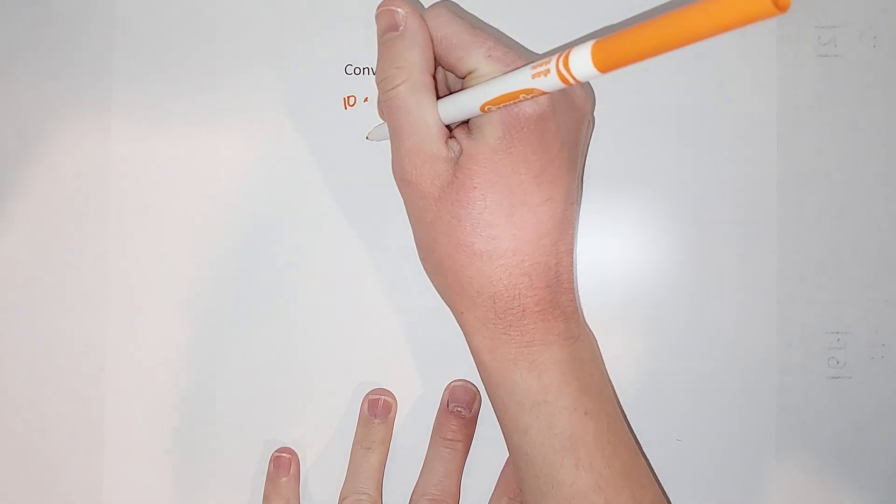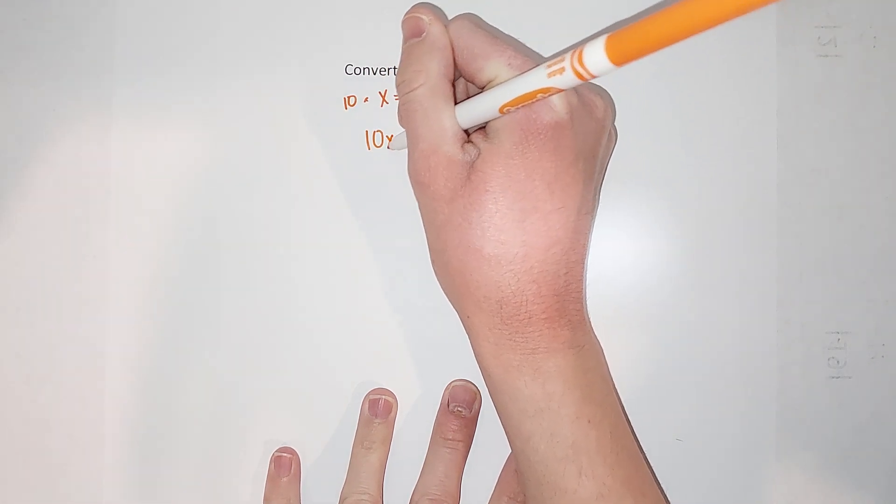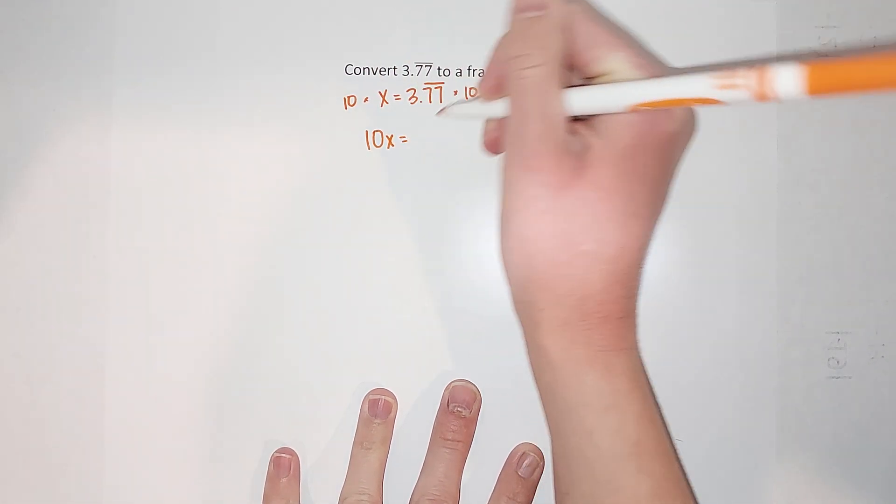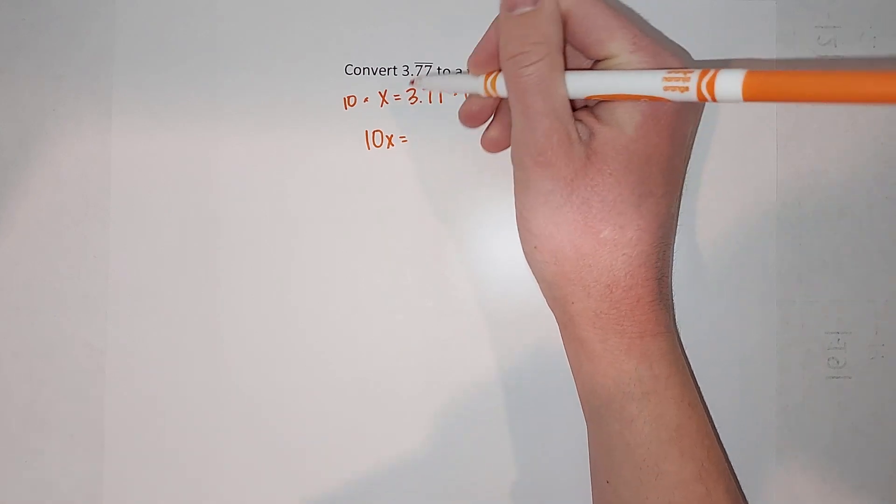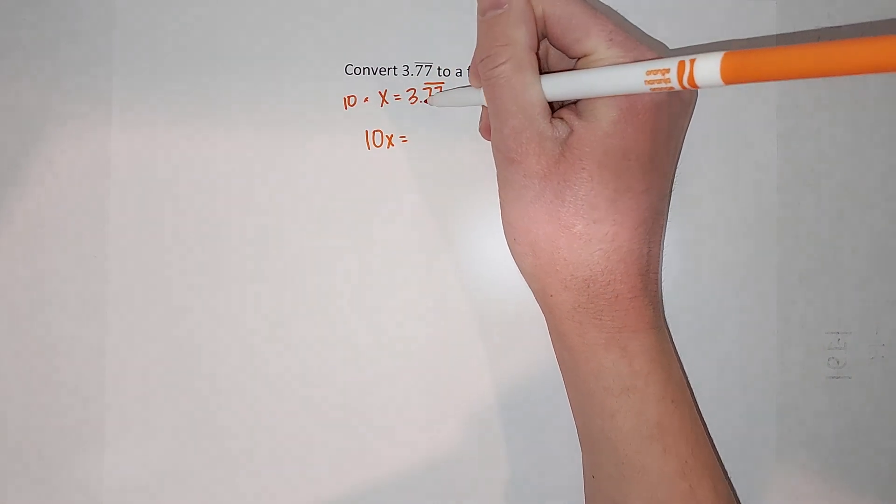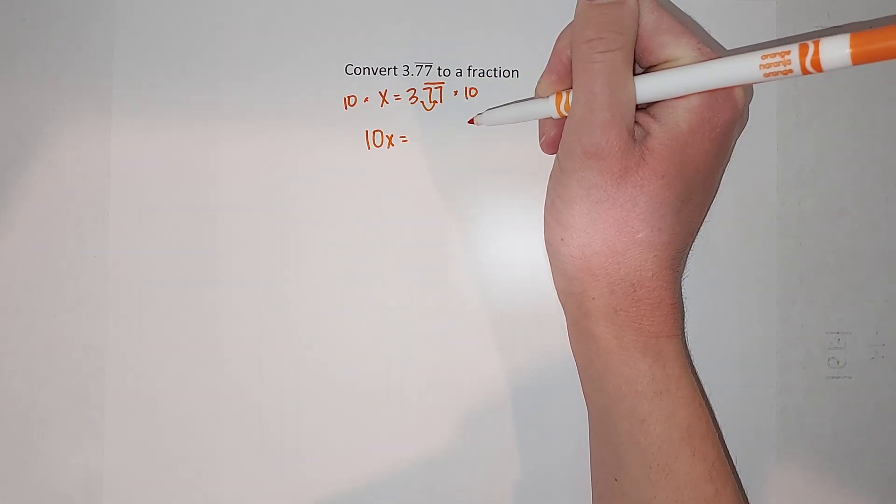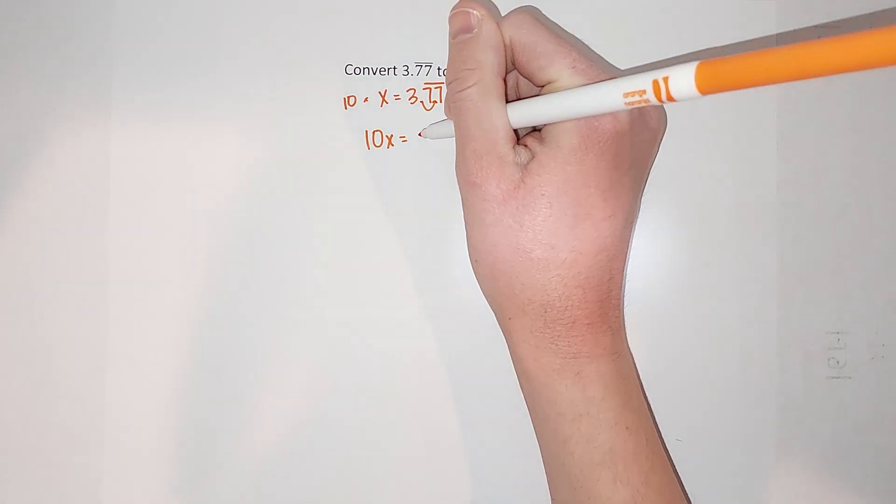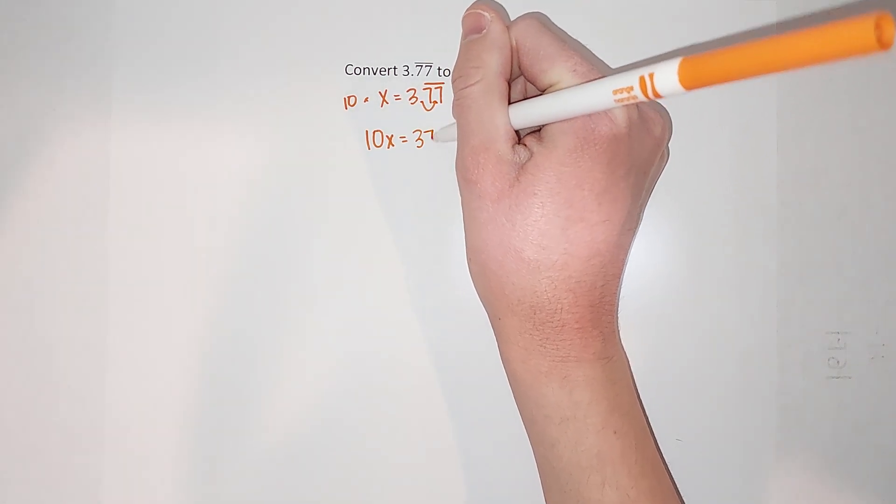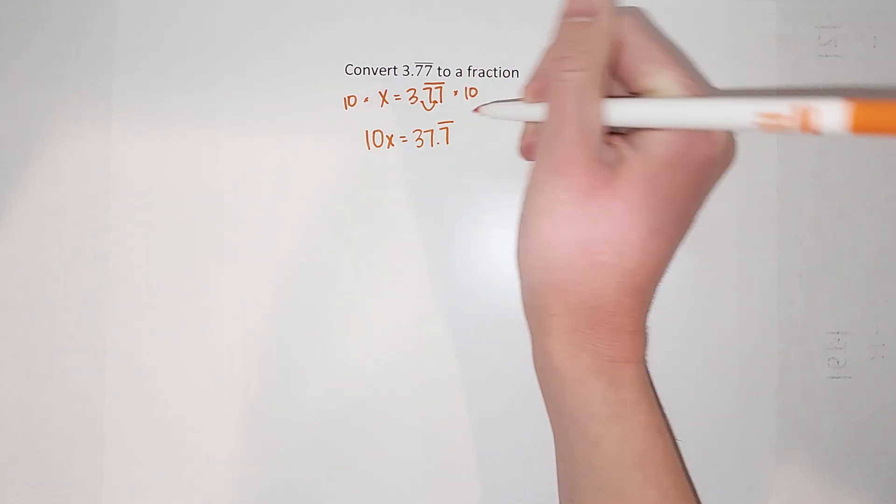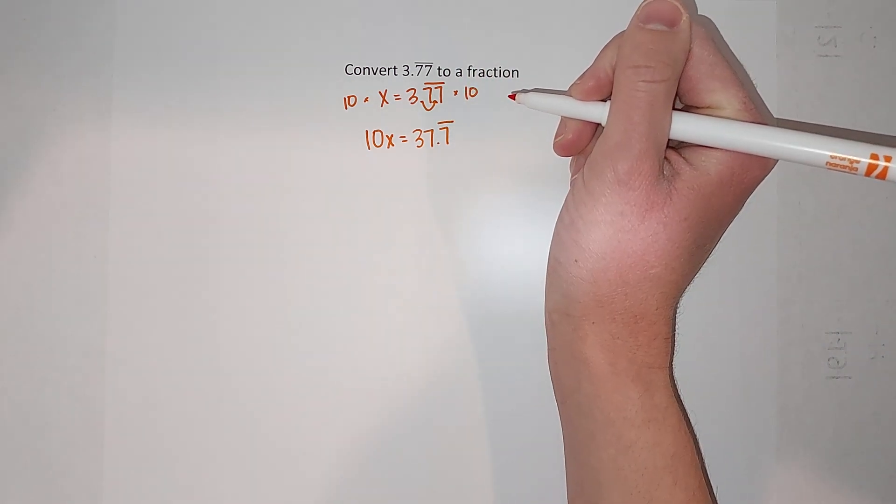So 10 times x gives me 10x and that is equal to—when I multiply a decimal by 10 it just moves my decimal over one place—so I'm left here with 37.7 repeating.